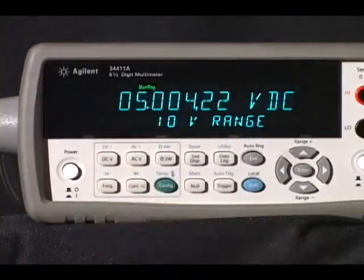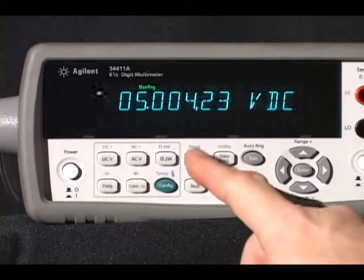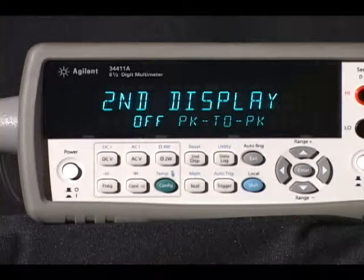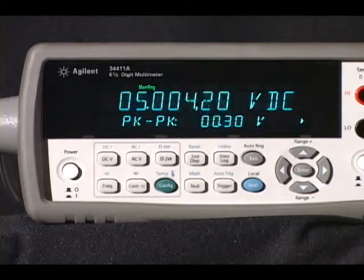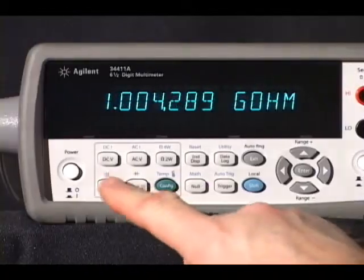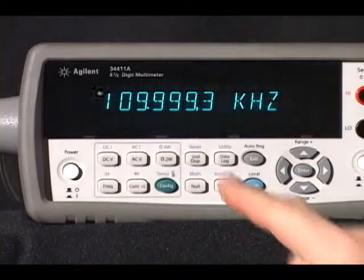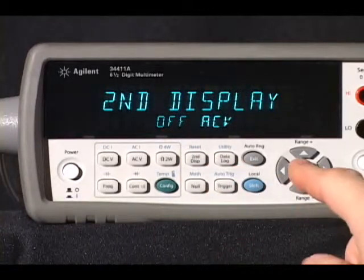The dual display allows the bench user to monitor two different parameters at once, such as AC ripple riding on top of a DC voltage, or you can display both frequency and the amplitude of an AC voltage.